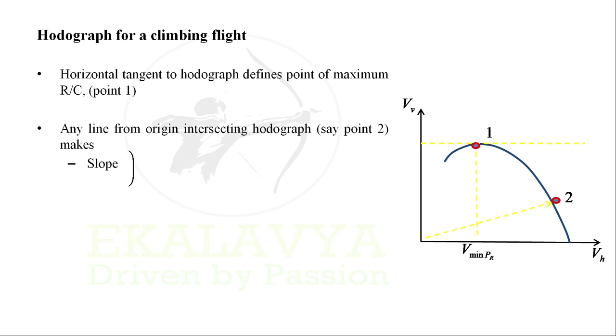Slope of VV by VH gives angle theta, the climb angle with respect to horizontal axis, and length of line V infinity.